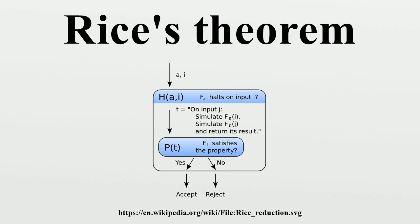Rice's theorem can be succinctly stated in terms of index sets. Let C be a class of partial recursive functions with index set I_C. Then I_C is recursive if and only if I_C is empty or equals the set of all natural numbers. One can regard Rice's theorem as asserting the impossibility of effectively deciding for any recursively enumerable set whether it has a certain non-trivial property. In this section, we give an analog of Rice's theorem for recursive sets instead of recursively enumerable sets.